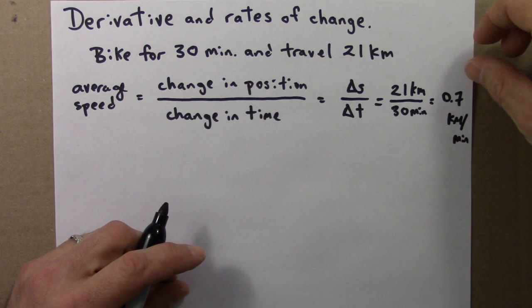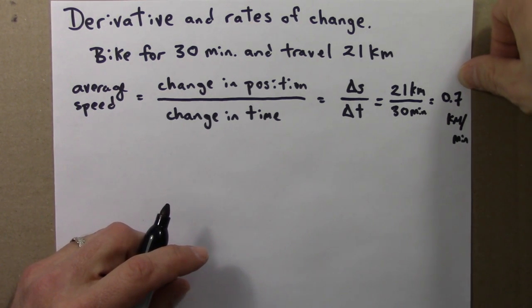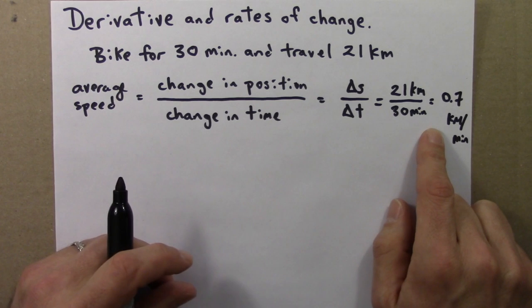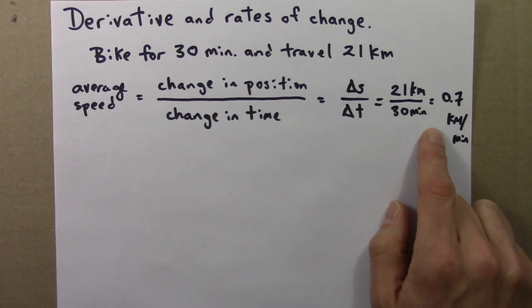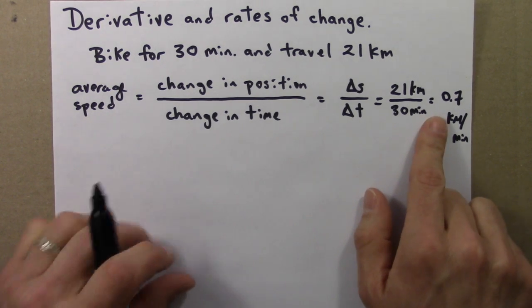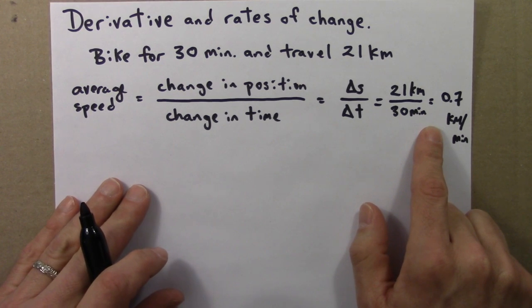Now, this doesn't mean that at every instant you are going at exactly 0.7 kilometers per minute. Most likely, sometimes you are going faster, and sometimes slower. Faster down a hill, slower up a hill. Faster when you feel more energetic, slower when you're tired. So, this is an average. You weren't going this speed the entire time, but on average, this was your speed.